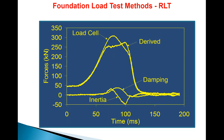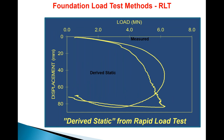What we're looking for is that regular load-displacement quadrant we use for static load tests — applied load on one axis, downward displacement on the other. The smooth curve is what we measure with the load cell and with an optical displacement sensor or accelerometer. Once we subtract the effect of inertia and damping, we end up with a curve shaped much more like a conventional static load test. In rapid load testing, we call that the 'derived static curve.'